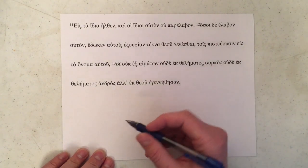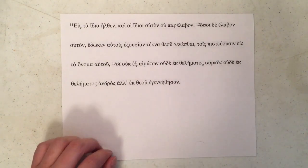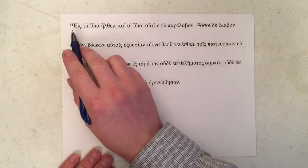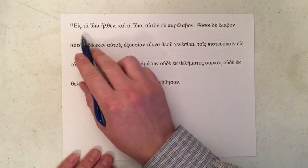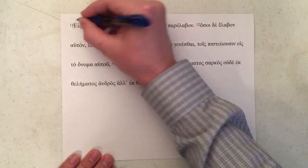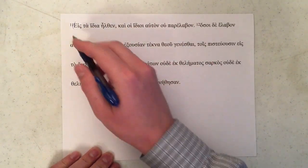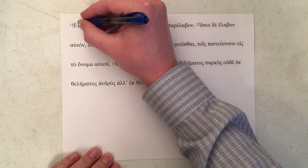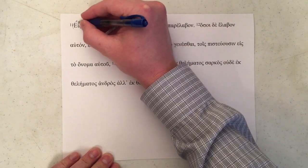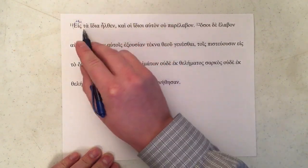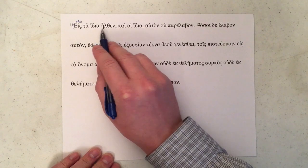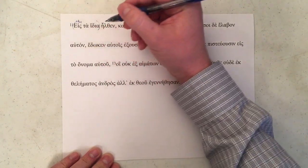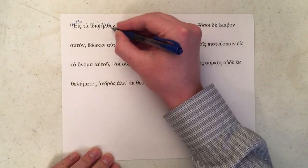Let's go to our first clause. We want to find our verb first, and our verb will tell us what our subject should look like if we even have a subject. The very first word there is 'eis,' and that's going to be a preposition, so we're going to create a bracket right there. Eis normally takes the accusative, but it is not our verb. 'Ta,' 'idia' — neither of those are our verb. And then we come to 'ēlthen,' the last word in the clause, which will close off that prepositional phrase and give us our verb.